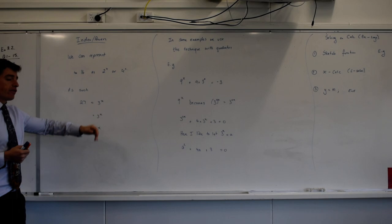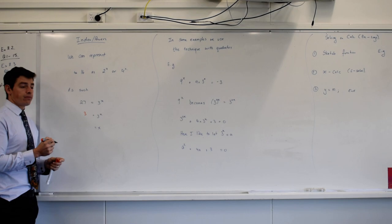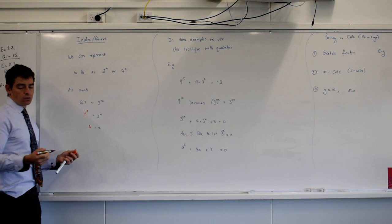What do you think my next line of working will be? 27 equals 3 to the power of x. Given what I've just said. Change 27 into the base of 3. Yep, so I want to turn 27 into something with a base of 3 which is what? 3 to the power of 3 which means that x equals 3.